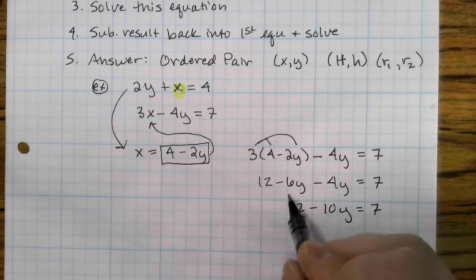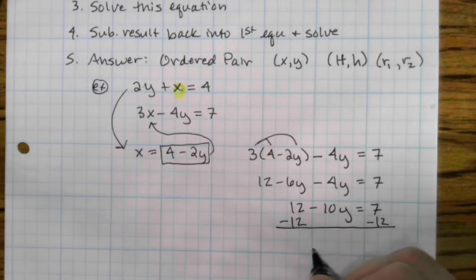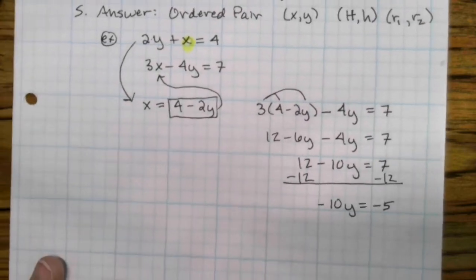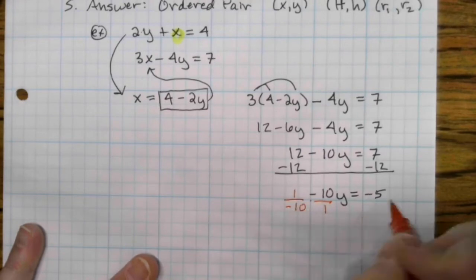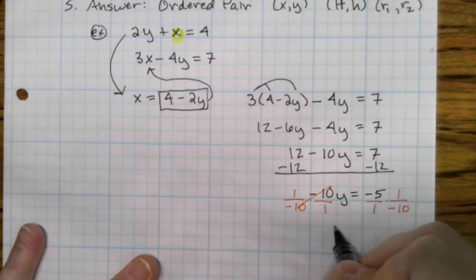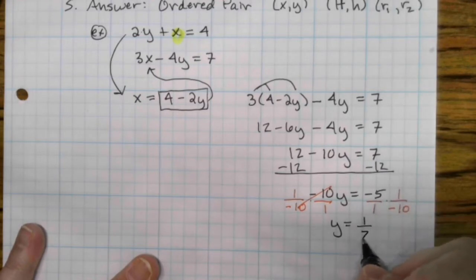Continuing to solve, we're going to subtract 12 from both sides. You get negative 10y equals negative 5. To get y by itself, you want to multiply by the reciprocal of negative 10, which is 1 over negative 10. The negative 10s divide out. And you have a negative 5 over negative 10, which reduces to a positive 1 half.